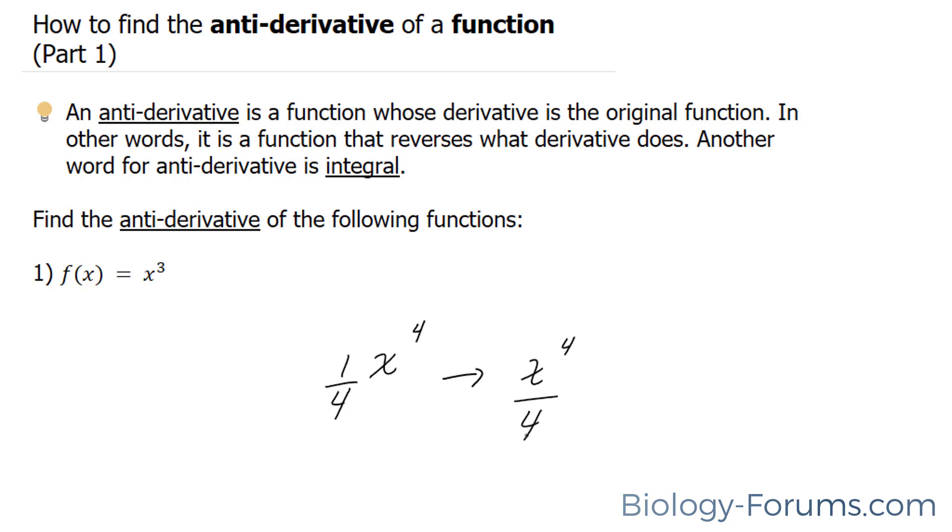Now, if I were to take the derivative of this, we would end up with x to the power of 3. However, what if there was a constant beside this? So what if there was a plus 10, for example? How do we take into account an arbitrary constant that might have existed? The way we do this is we simply add the letter c, and we denote that c is an arbitrary constant.